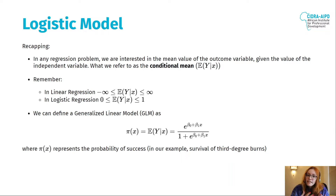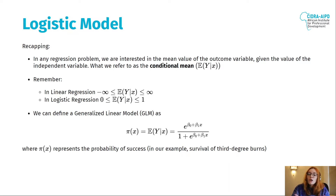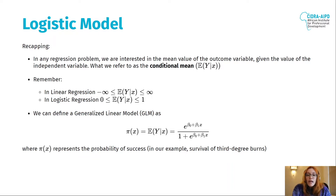In linear regression, this conditional mean can be anywhere in the real numbers — from minus infinity to infinity. But in logistic regression, we are bounded by zero and one. We can define a generalized linear model as a function that will give us that S-shape. This pi of x represents our probability of success, which in our case is the survival of the third-degree burns.